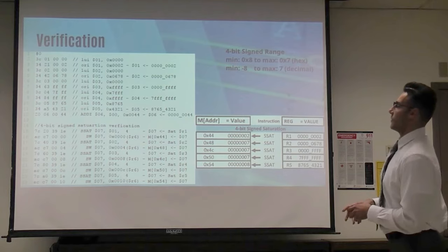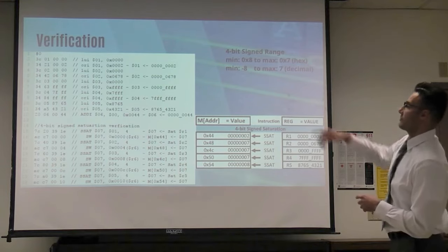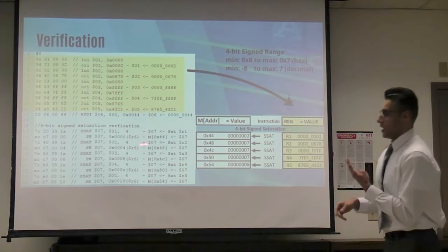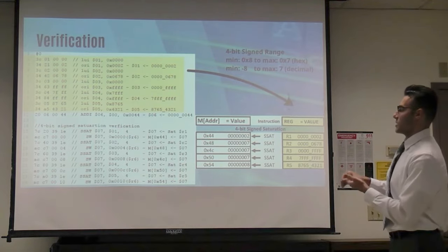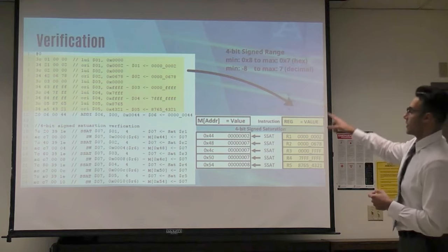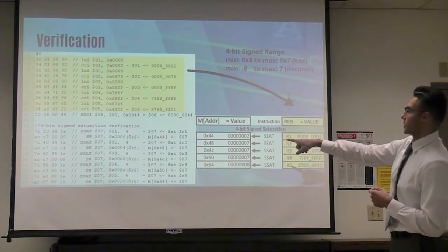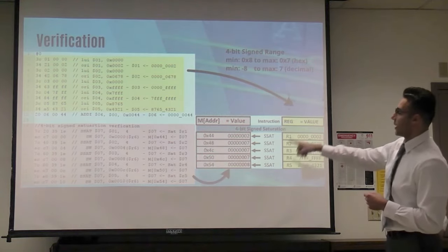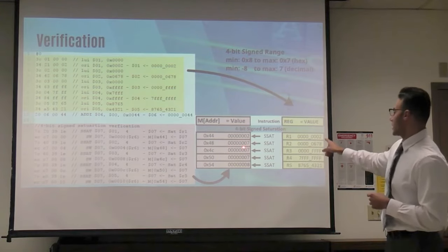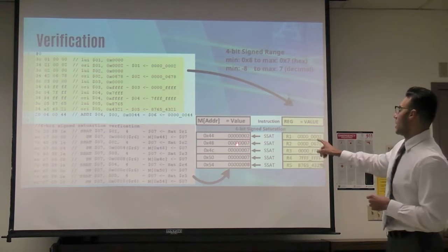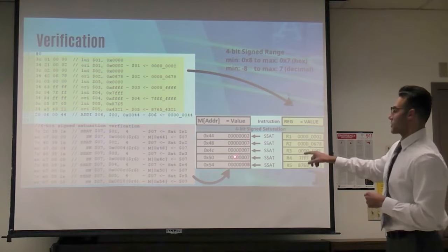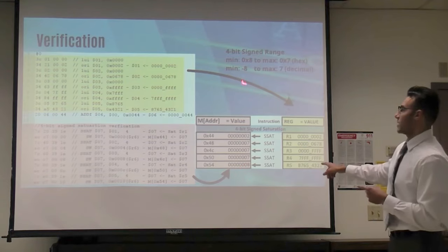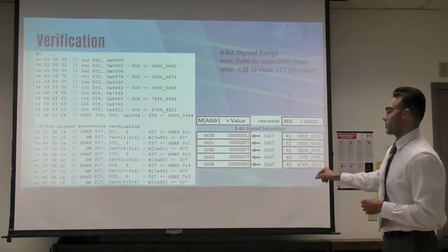Here is our verification of the signed saturation instruction working. We preload values to registers, then test register 1, which holds a value, to saturate up to 4 bits. If the data is between negative 8 and 7 it is saved to a register. R1 is within the bounds, so it's saved. R2, R3, and R4 are saturated to the maximum value of 7 and saved to addresses 48, 4C, and 50. R5 is negative and lower than the minimum value, so it's saturated to the minimum number and saved.